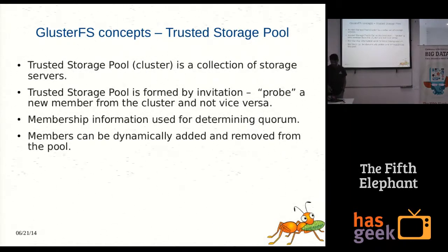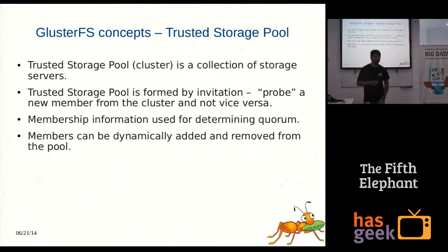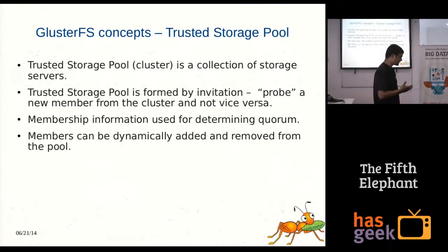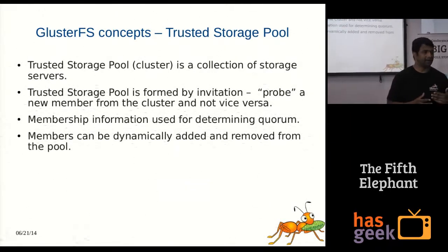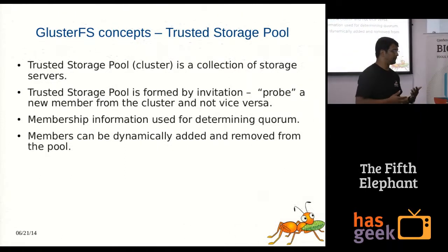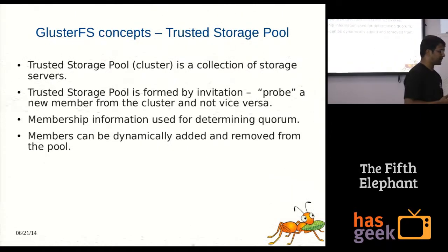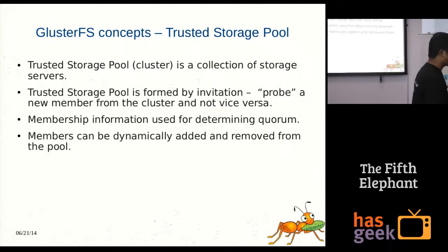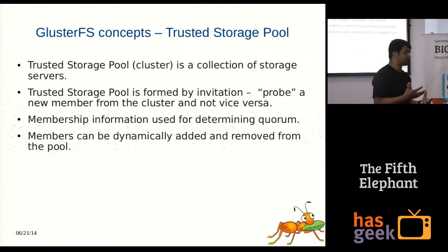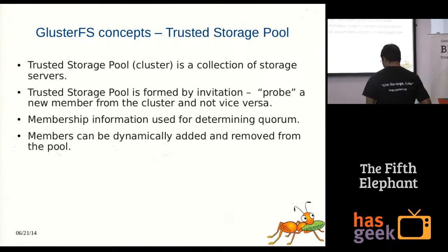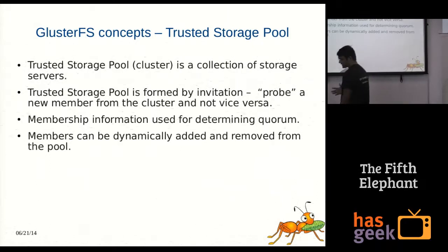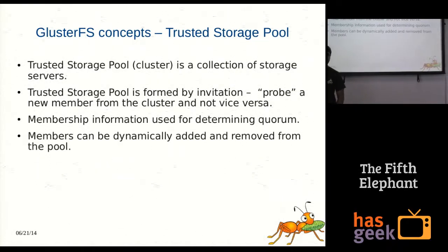Member information is used for determining quorum. In a distributed file system, because of some disaster, a couple of nodes may go down. In GlusterFS, you can set a quorum. For example, if I have ten nodes and five go down, I don't want to continue operating because it puts data at higher risk of corruption. That feature exists in GlusterFS — you can use node count information from the storage pool to set a quorum parameter and decide whether to stay in operational mode or not.